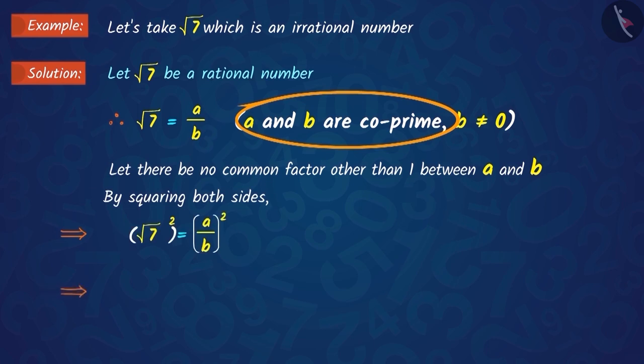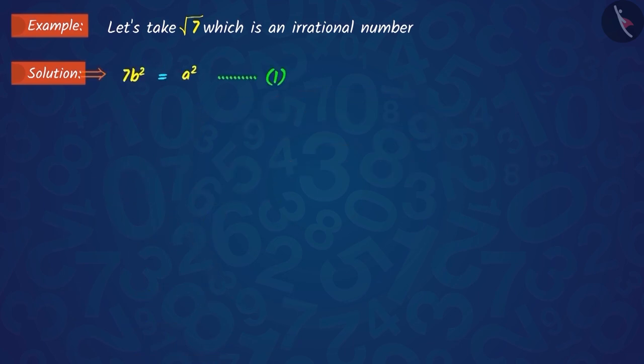By squaring both sides and rearranging, we get 7B² equals A². That means that 7 divides A². Therefore, 7 will also divide A.